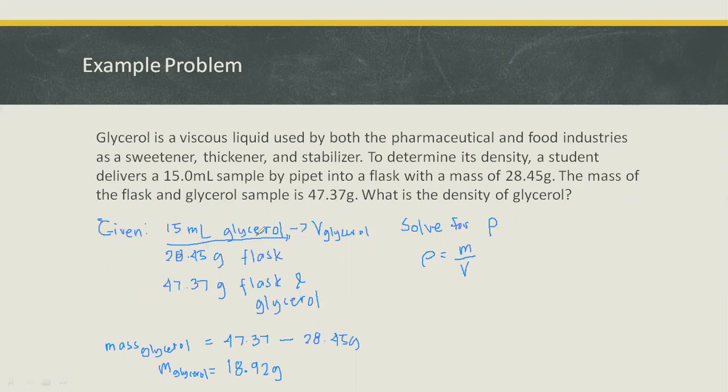Now, we have volume of the glycerol, we can solve now for density. So, density is equal to mass which is 18.92 grams over 15 milliliter. Solve that and therefore we have density, this is equal to 1.26 gram per milliliter.